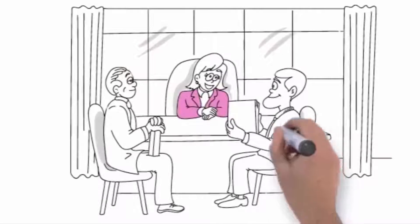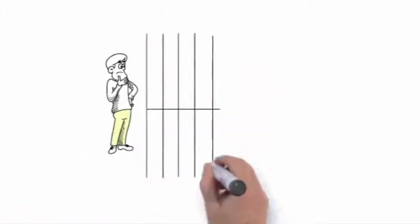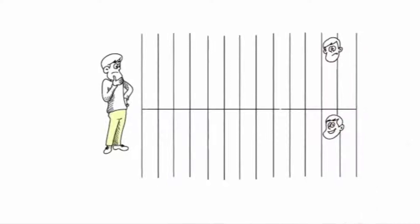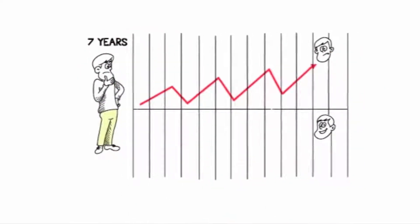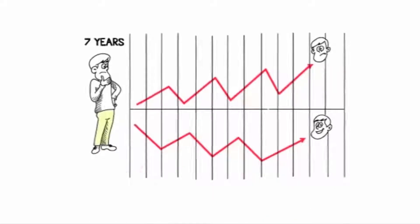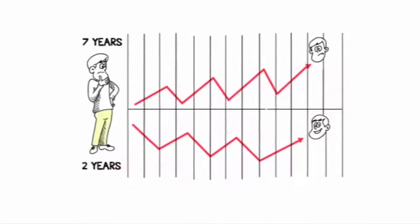Let's take a quick look at the difference between the two. When you allow a foreclosure to take place, you can't qualify to buy a home again for seven years. When you short sale your house, you can qualify for a new home loan in as little as two years if you meet all the other lending criteria.